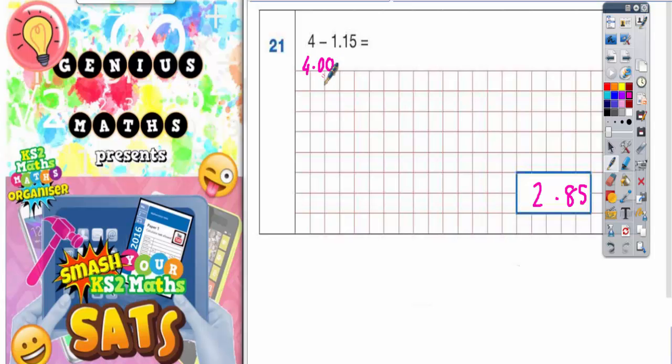Now the reason why we're saying that is because this number here 1.15 has got 2 digits after the decimal point. So to make the 4 have 2 digits after the decimal point. Well there is no decimal point to begin with. So you'd have to put a point in after the 4 and then put 2 zeros to make it have 2 digits after the decimal point.